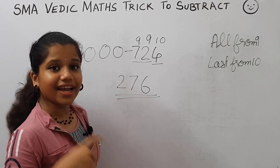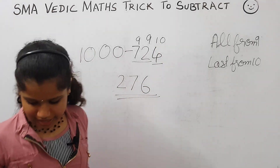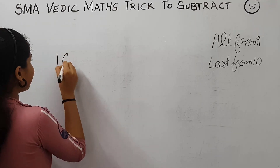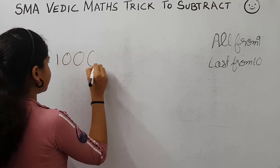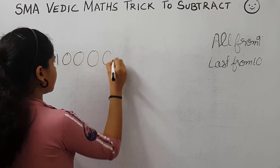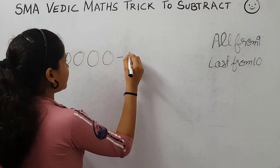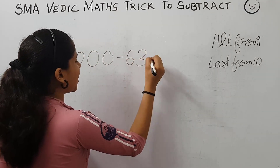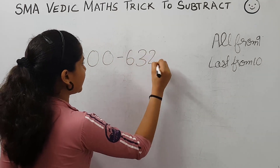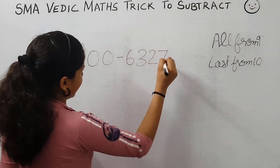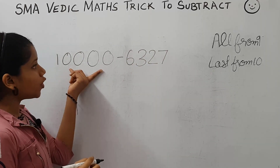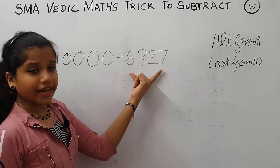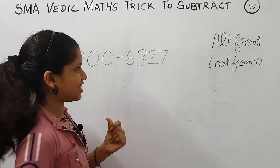Now let's take another question: 10,000 minus 6,327. Here, there are four zeros and four digits.